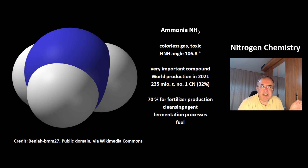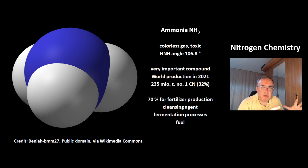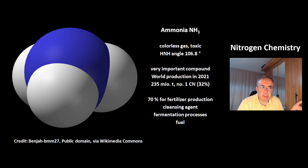This is the molecule ammonia, NH₃ — a colorless, very toxic gas. The H-N-H angle is 106.8 degrees, because the lone electron pair at the nitrogen atom occupies a bit more space than the bonding electron pairs, pressing the bonds a bit together. Ammonia is a very important compound — world production in 2021 was 235 million tons, with China as the number one producer at 32%. Ammonia is 70% used as fertilizer, and also used for cleansing agents, fermentation processes, and as fuel.